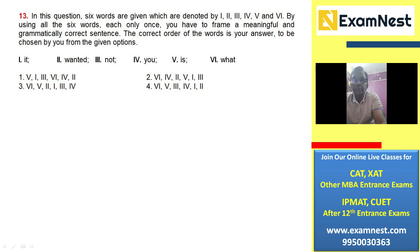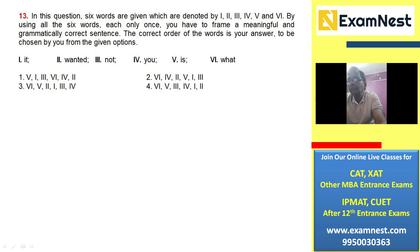Take the next sentence. In this question, six words are given which are denoted by first, second, third, fourth, fifth, and sixth. By using all six words, each only once, you have to frame a meaningful and grammatically correct sentence. The correct order of words is your answer, to be chosen from the given options.